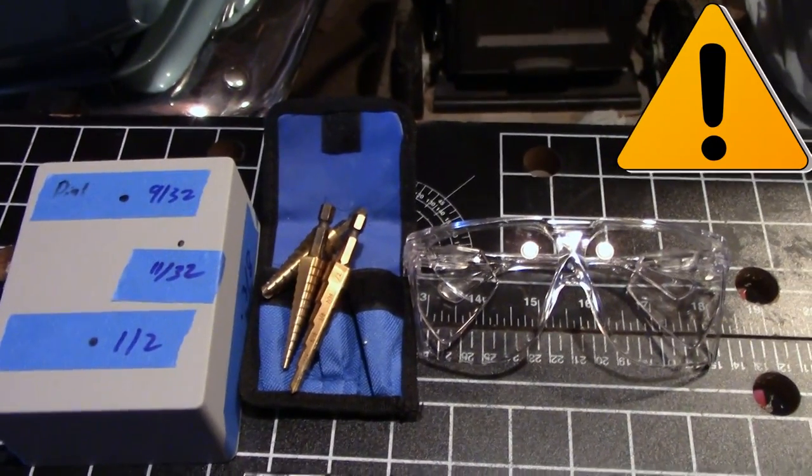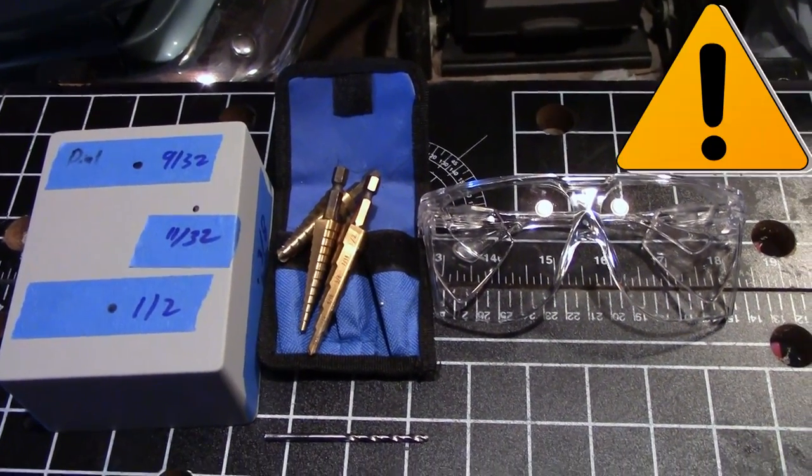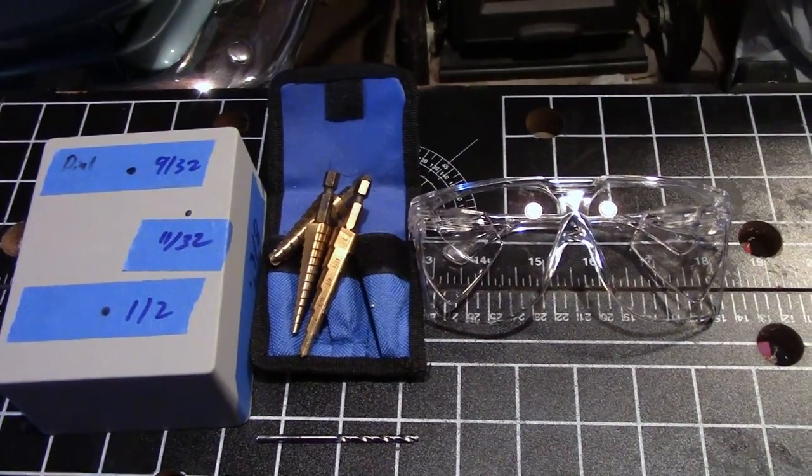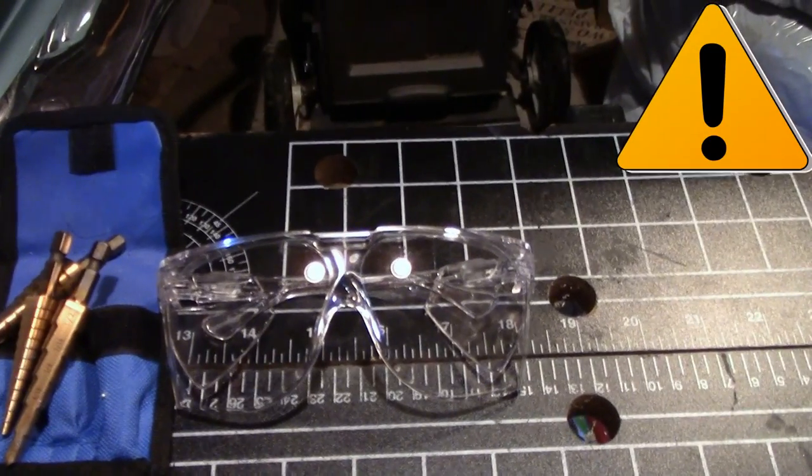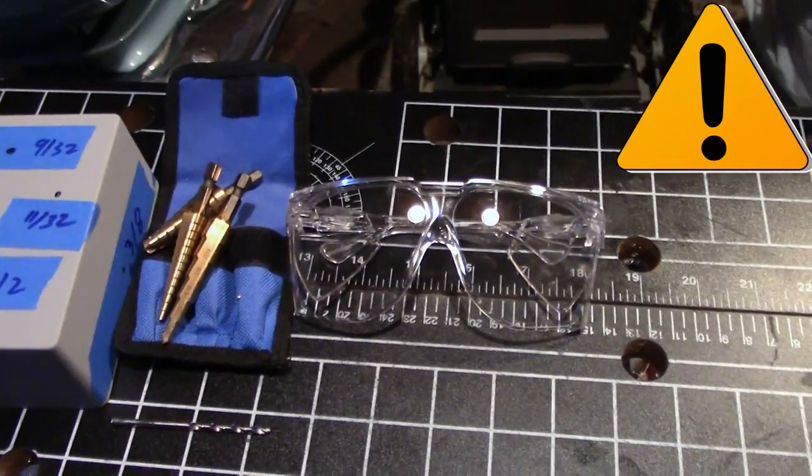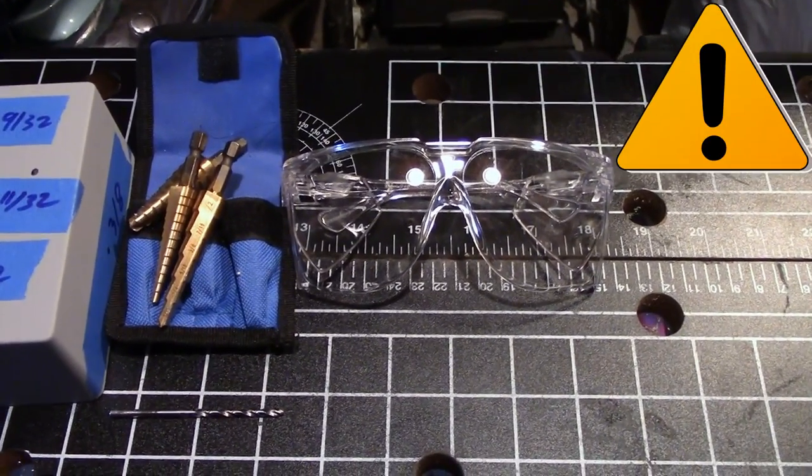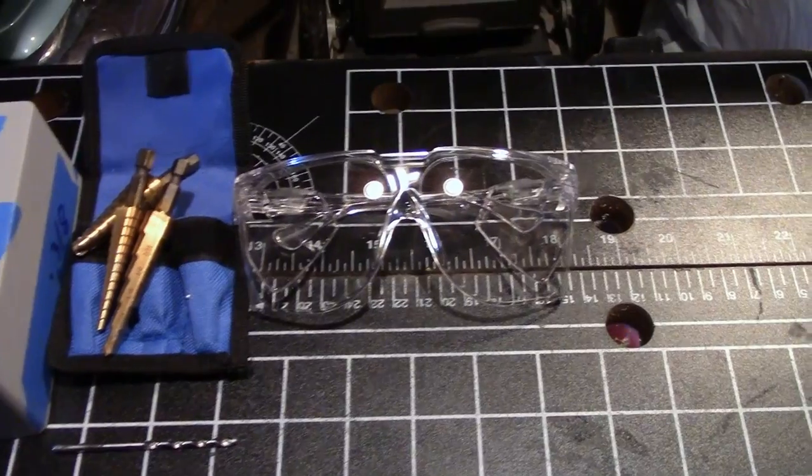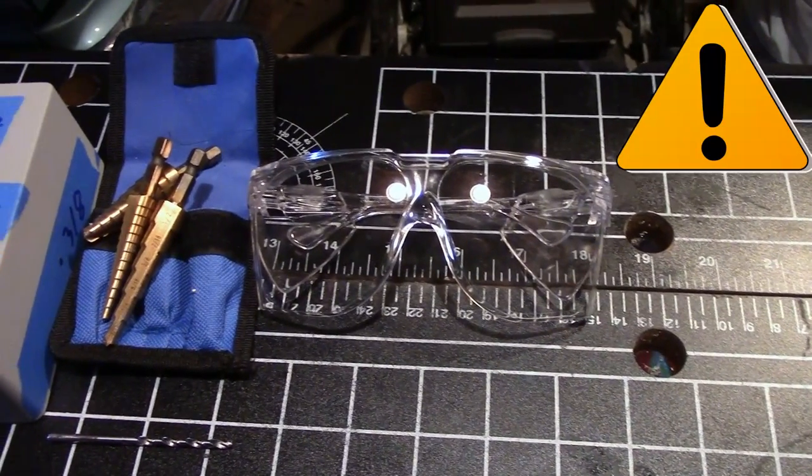Before you begin be aware that drilling into the enclosure will release metal shavings. Wear safety goggles and conduct the drilling in an area where you don't mind shavings flying around. Or better yet you may want to have a friend hold a vacuum on the enclosure while drilling to prevent shavings from flying around.